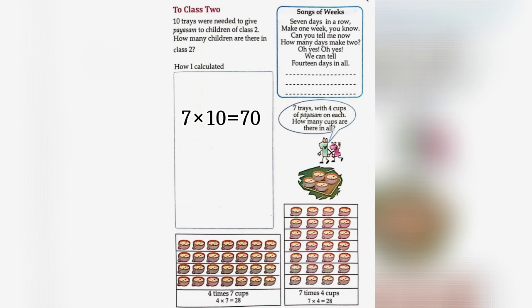7 trays with 4 cups of Paisam on each. How many cups are there in all? Here we can see 7 times 4 cups, i.e. 7 into 4 equals 28. Another method: 4 times 7 cups, i.e. 4 into 7 equals 28.